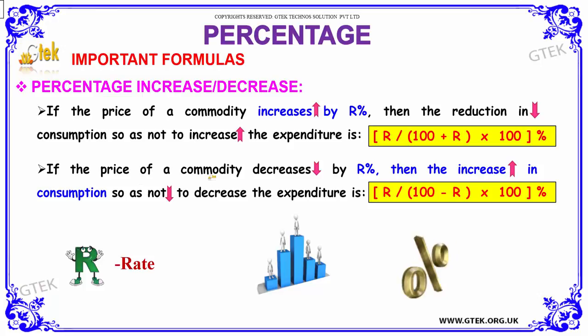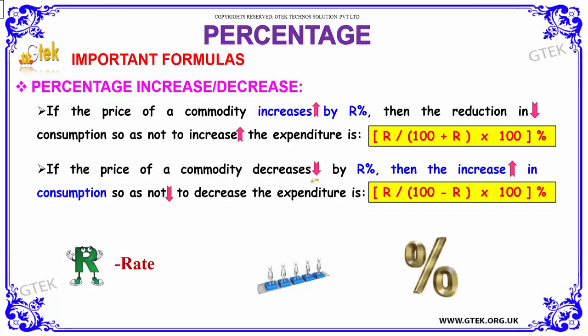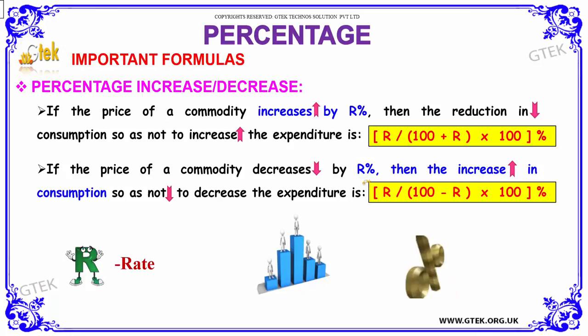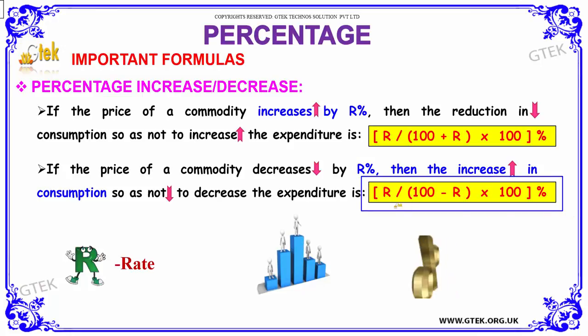If the price of the commodity decreases by r percentage, then the increase in consumption so as not to decrease the expenditure will be given by the formula: r by (hundred minus r) into hundred percentage.